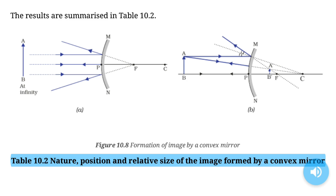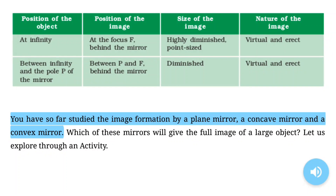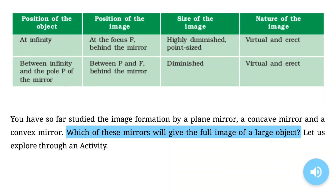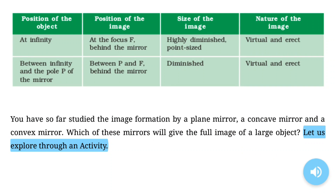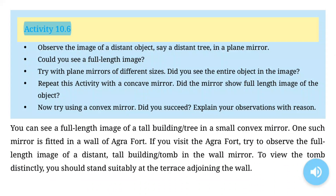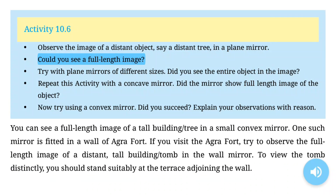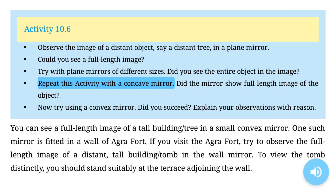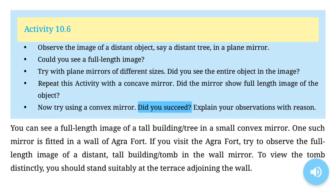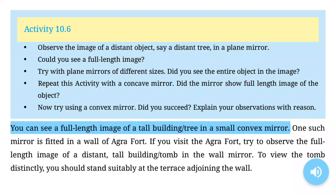We consider two positions of the object for studying the image formed by a convex mirror: first when the object is at infinity, and second when the object is at a finite distance from the mirror. The results are summarized in Table 10.2. You have so far studied the image formation by a plane mirror, a concave mirror and a convex mirror. Which of these mirrors will give the full image of a large object? You can see a full length image of a tall building or tree in a small convex mirror.